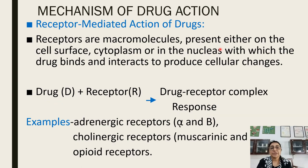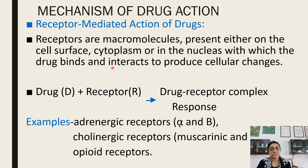Now receptor-mediated action. Receptors are protein macromolecules present either on the cell surface, in the cytoplasm, or in the nucleus, with which the drug binds and interacts to produce cellular action. Drug plus receptor forms the receptor-drug complex. Examples include adrenergic receptors like alpha and beta receptors, cholinergic receptors like muscarinic and nicotinic receptors, and opiate receptors.